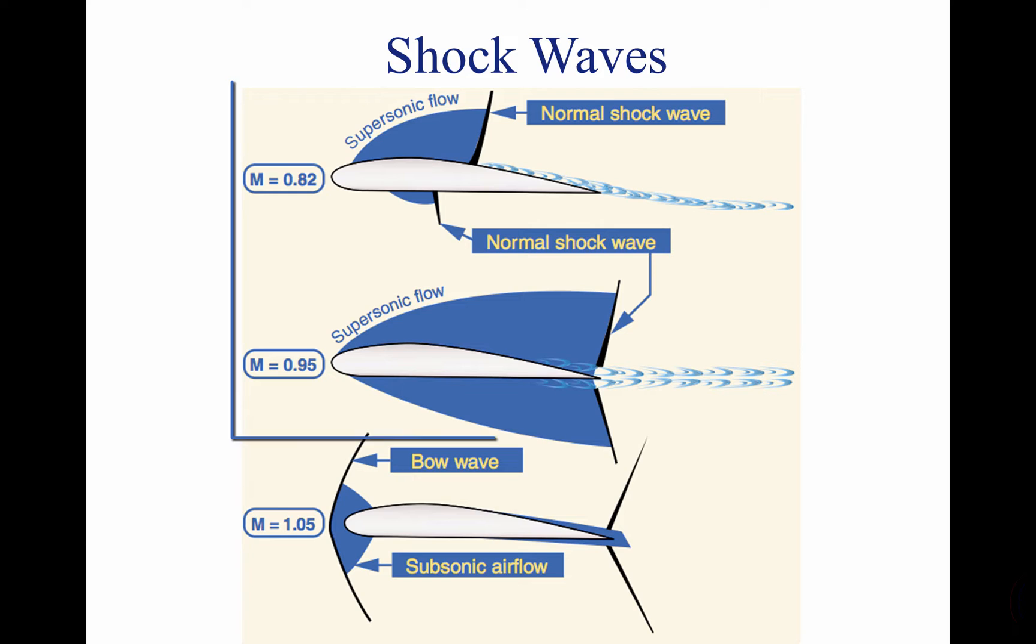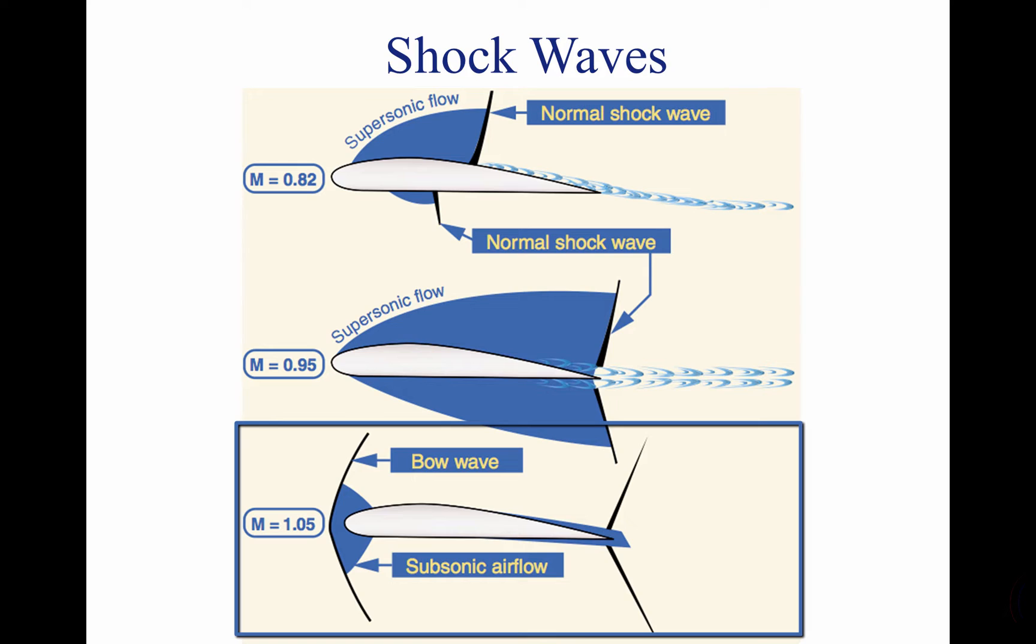When an aircraft flies at subsonic speeds, the air in front of the wing acts to warn the air around it that it's going to be separated. When it occurs, the air is able to move out of the way and easily let the wing pass through. However, when speeds increase to speeds more than the speed of sound, this cushion of air does not warn the oncoming air quickly enough to get out of the way.